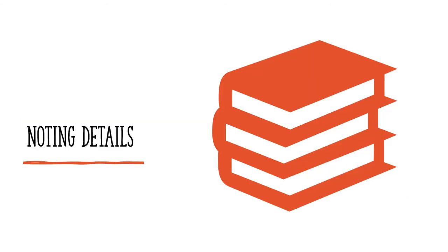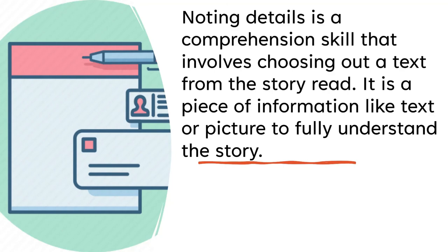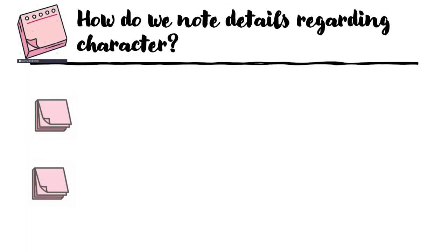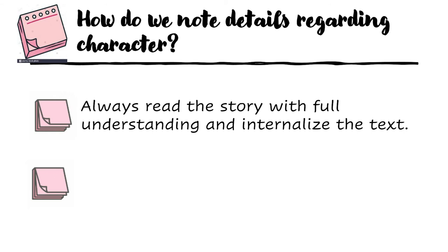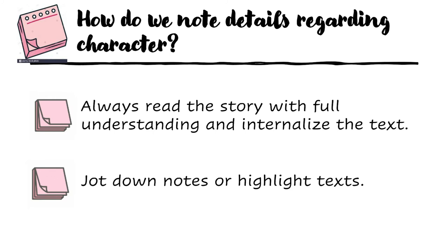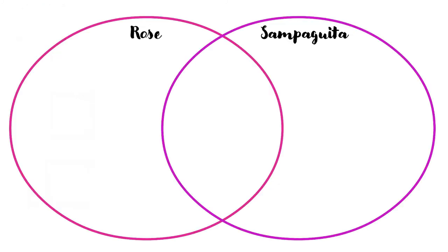For us to understand more about the character and attitude, we need to note the details in the story. Noting details is a comprehension skill that involves choosing out a text from the story read. It is a piece of information — like text or picture — to fully understand the story. So how do we note details regarding a character? First, always read the story with full understanding and internalize the texts. Then jot down notes or highlight texts.